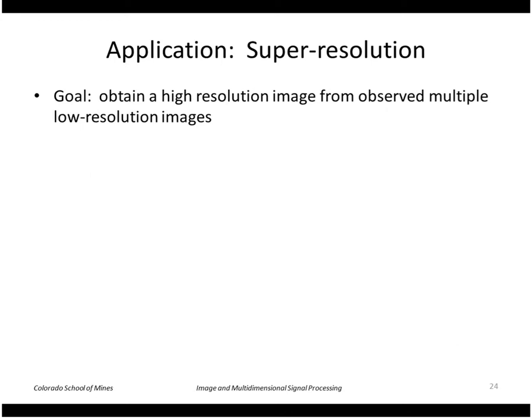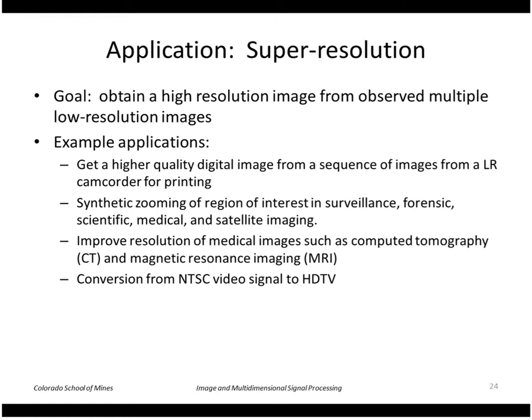One more example I'll look at now is super-resolution. Here we want to reconstruct a high resolution image using multiple low resolution images. This has applications in things like this: if we had a low resolution camcorder that gave us a sequence of images of a scene, we want to produce a higher quality, higher resolution still image. Or things like synthetic zooming in surveillance images or perhaps converting a low res video signal such as NTSC to a high res signal such as HDTV.